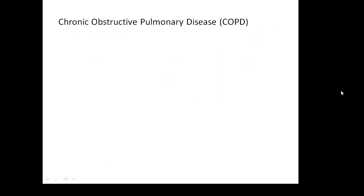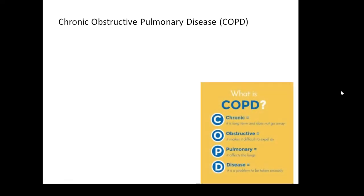We need to know about this disease: COPD — chronic obstructive pulmonary disease. Chronic means it's a long-term thing and it doesn't go away. Obstructive, because it makes it difficult to breathe — it obstructs your breathing. Pulmonary, which affects the lungs. And disease, because it's a disease.